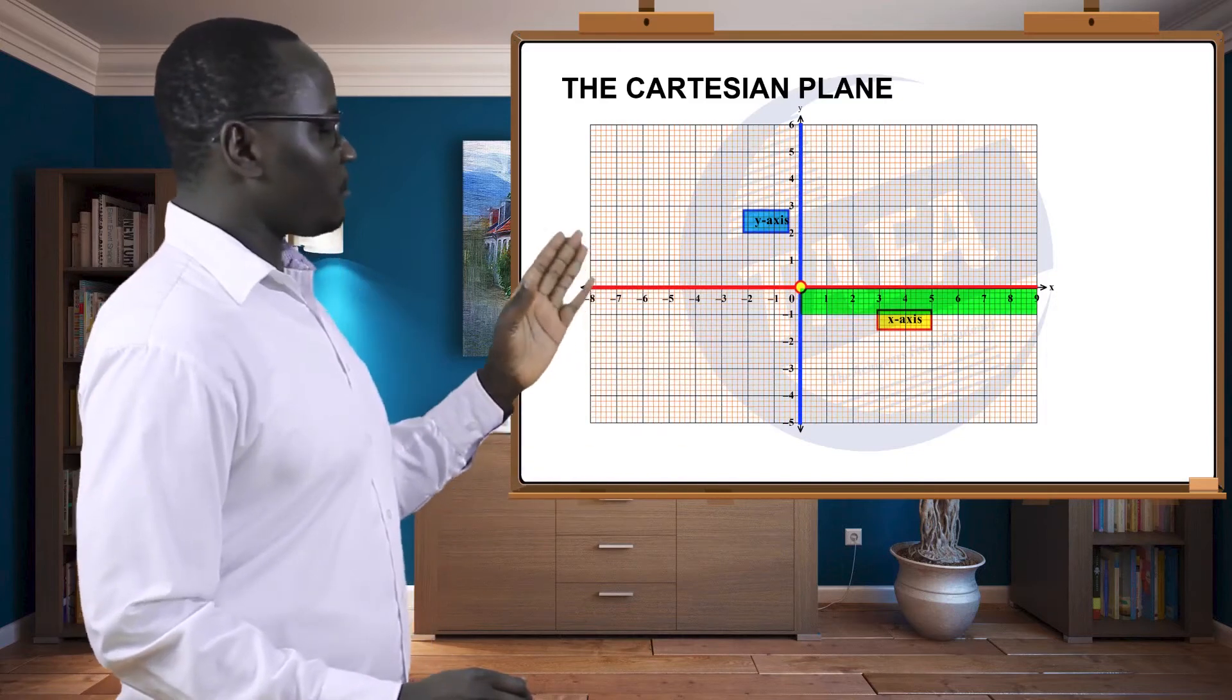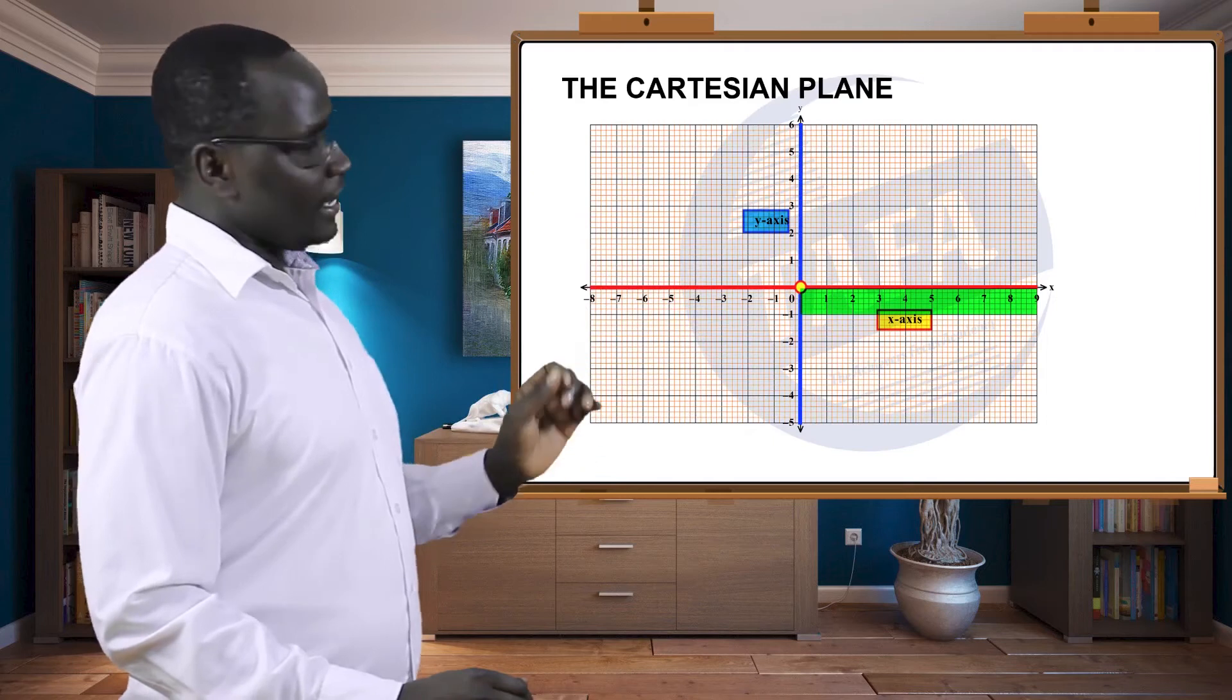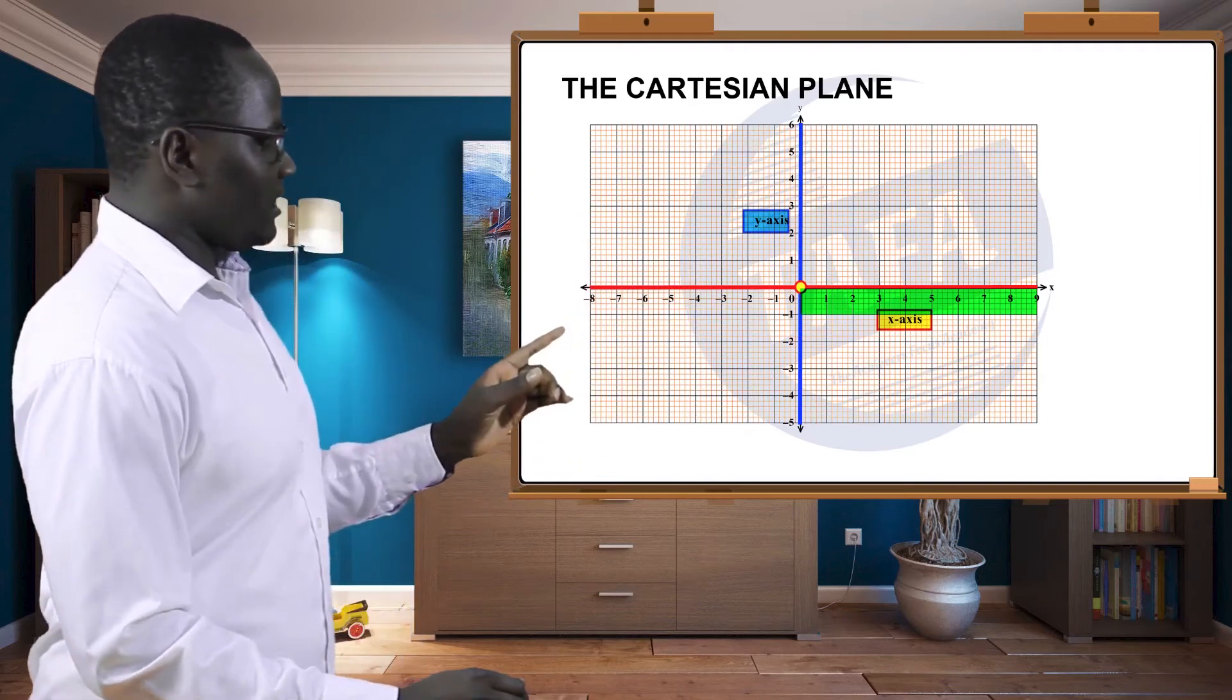You can see we have from zero, one, two, all the way. And you see in the x-axis there is an arrow, means that line can go on to infinity.